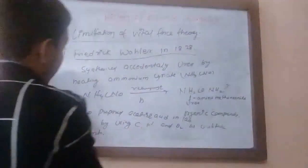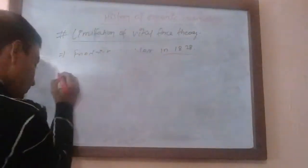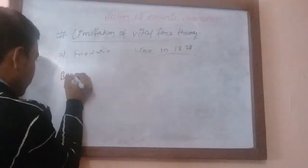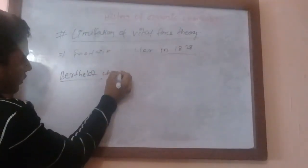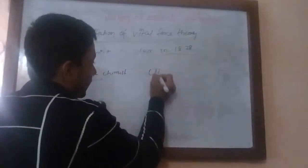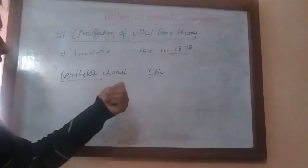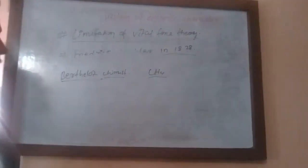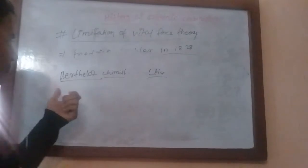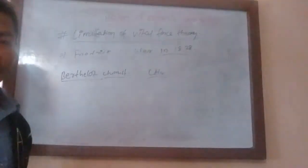The last scientist who supported Friedrich Wöhler and Kolbe was Berthelot, who prepared methane gas in the laboratory using carbon and hydrogen. This question is also asked in examinations — who prepared methane gas in the laboratory — and the answer is Berthelot. In this way, vital force theory was kicked out. Nowadays, more than 10 million organic compounds are known.